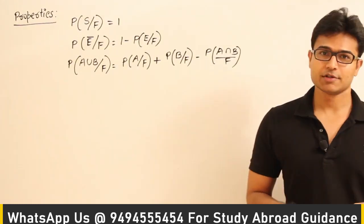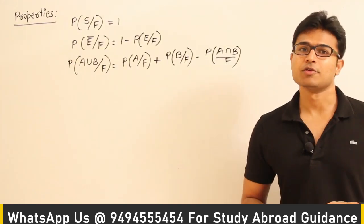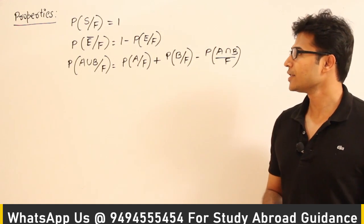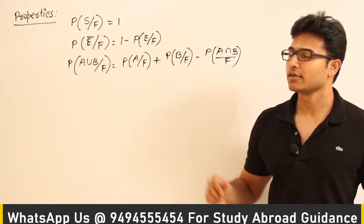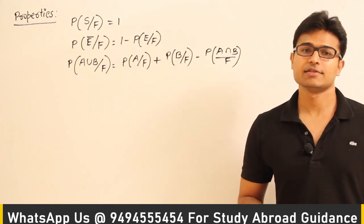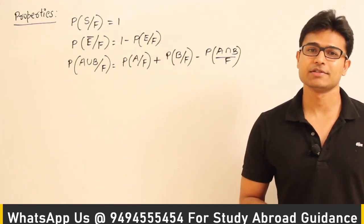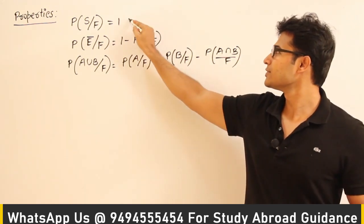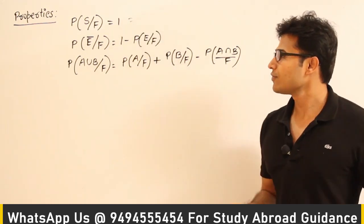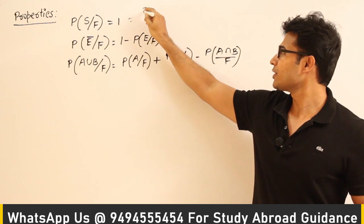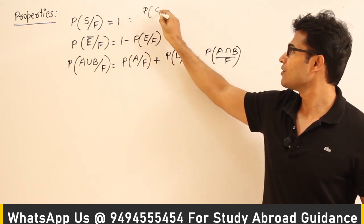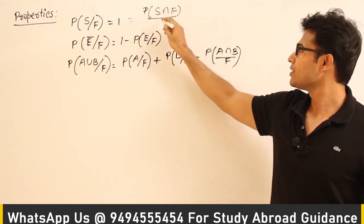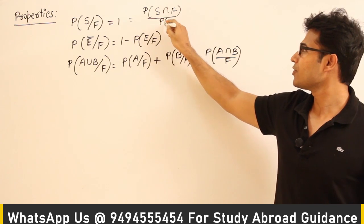Let's see some of the properties of conditional probability. One is P of S given F equal to 1, where F is an event and S is the sample space. P of S given F is nothing but P of S intersection F divided by P of F.